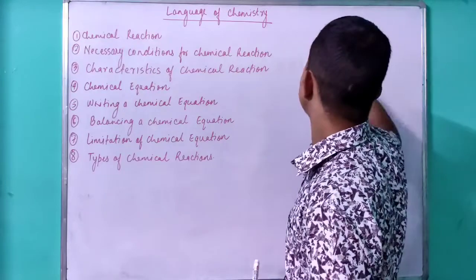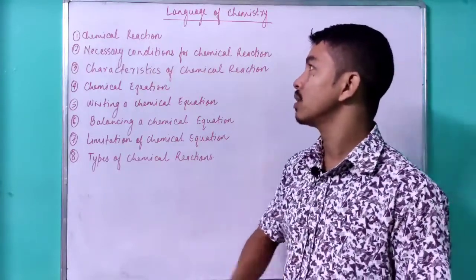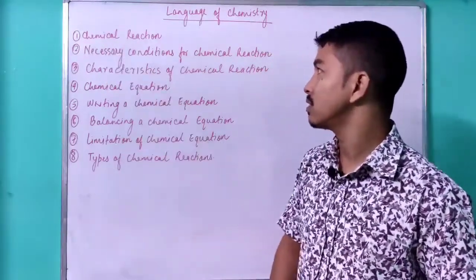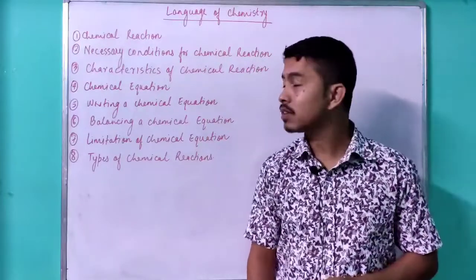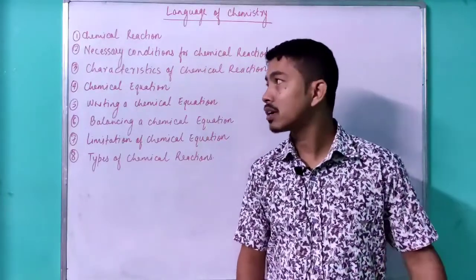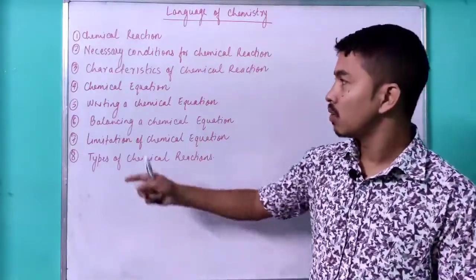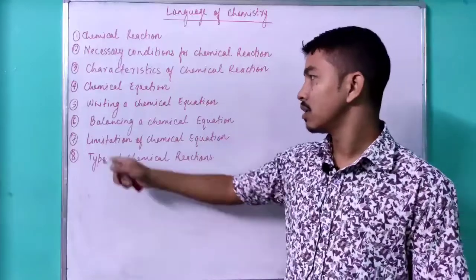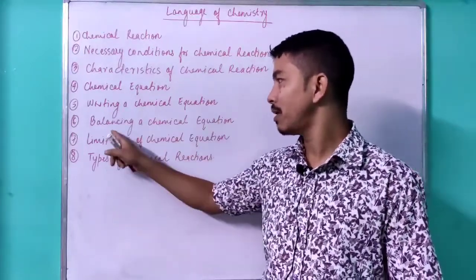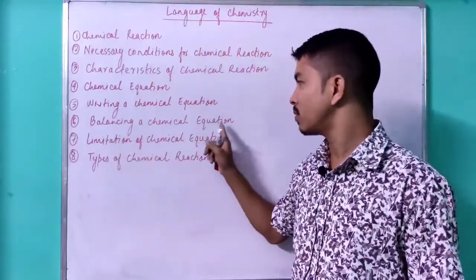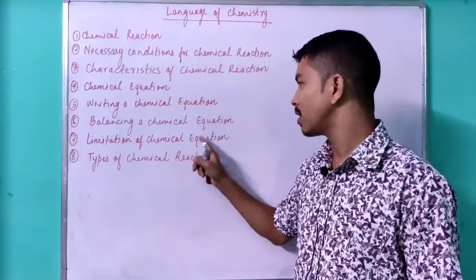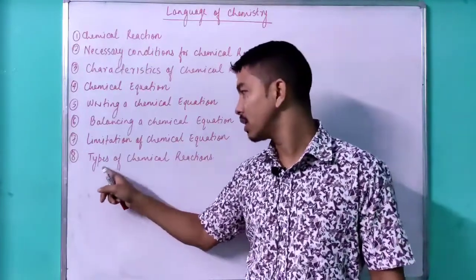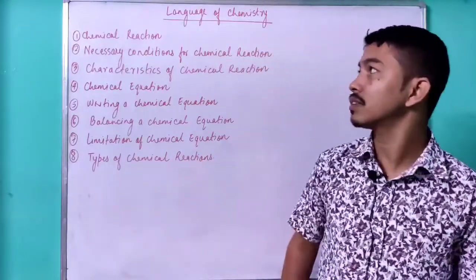In this chapter we will be learning about the chemical reaction, the necessary conditions for the chemical reaction, the characteristics of the chemical reaction, what is a chemical equation, writing a chemical equation, balancing a chemical equation, the limitations of the chemical equation, and finally the types of chemical reaction.